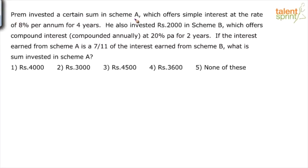Prem invested a certain sum in scheme A, which offers simple interest at the rate of 8% per annum for four years. So here itself you must know that 8% per annum for four years is what? 32% of simple interest. You're getting it? I mean by reading the question itself, you know that this is like simple interest is going to be 32%.